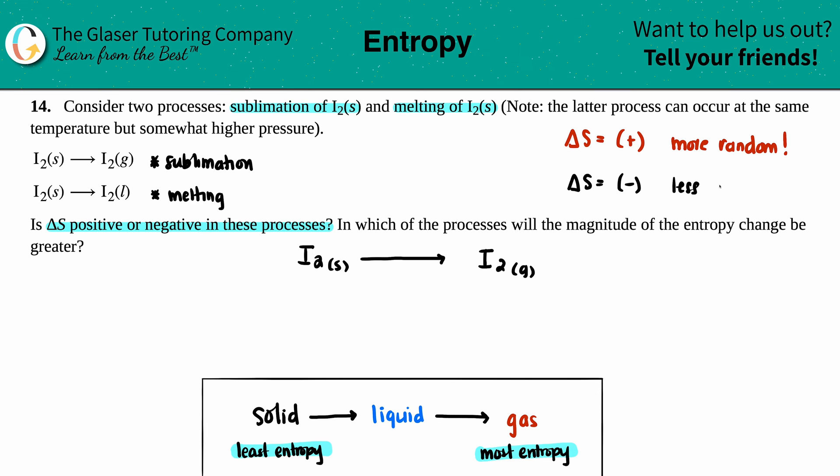So it's like less disordered, less random, less chaotic—whatever word you want to use, go for it. They all kind of mean the same thing. So now we have to use our states to figure this out.